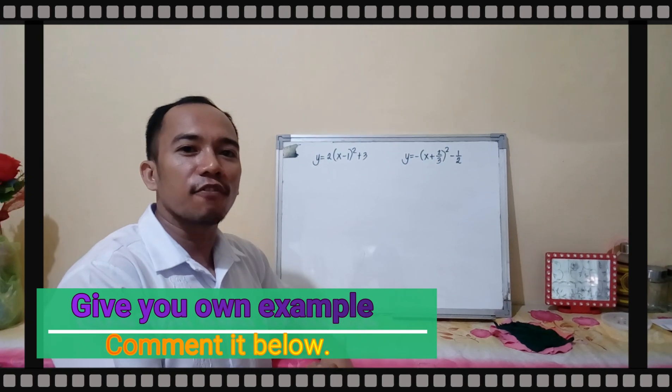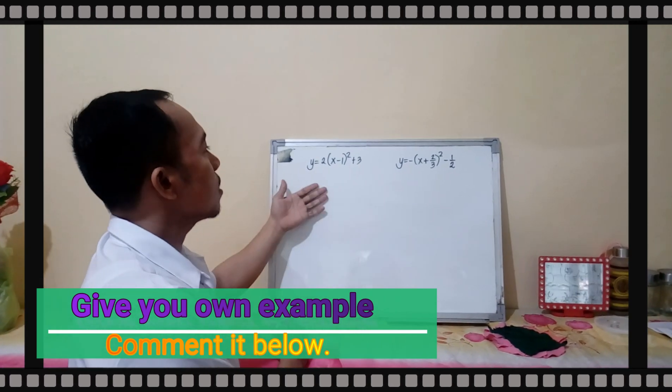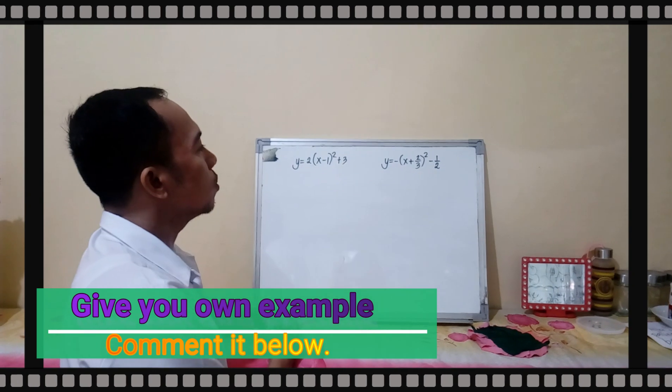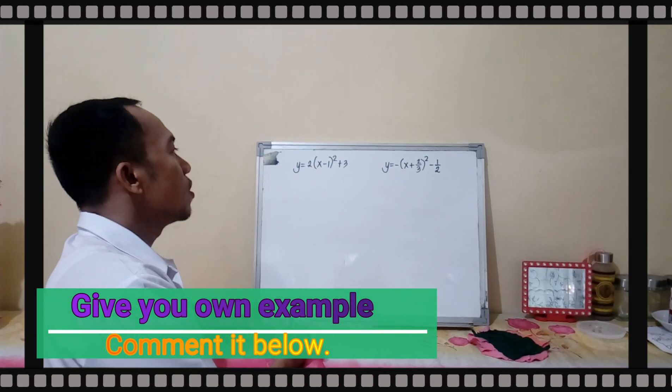What are the things that we can get from the vertex form of quadratic function? For example, here, I have here two vertex form of quadratic functions.